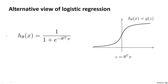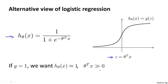In logistic regression, we have our familiar form of the hypothesis and the sigmoid activation function. I'm going to use z to denote theta transpose x. If we have an example with y equals 1 — meaning an example in the training, test, or cross-validation set — then we're hoping that h of x will be close to 1, which means that theta transpose x must be much greater than 0.